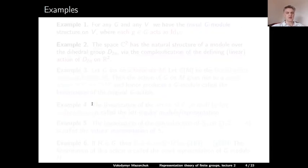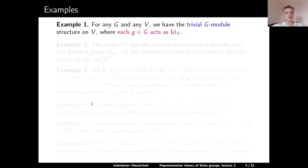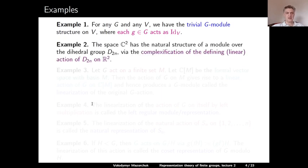Here are some examples. Example 1: any group G acts on any vector space V via the trivial action, where each element of G acts as the identity transformation of V. Example 2: the two-dimensional complex vector space has the natural structure of a module over the dihedral group D_{2n}, given by taking the natural defining linear action of D_{2n} on ℝ² and extending the scalars from real to complex numbers.